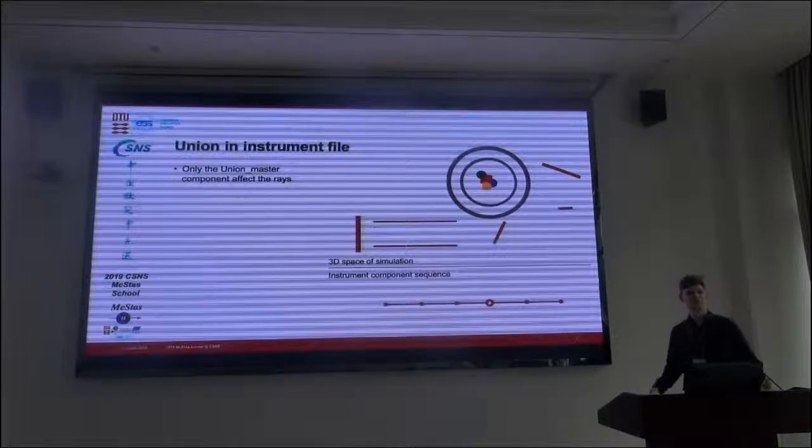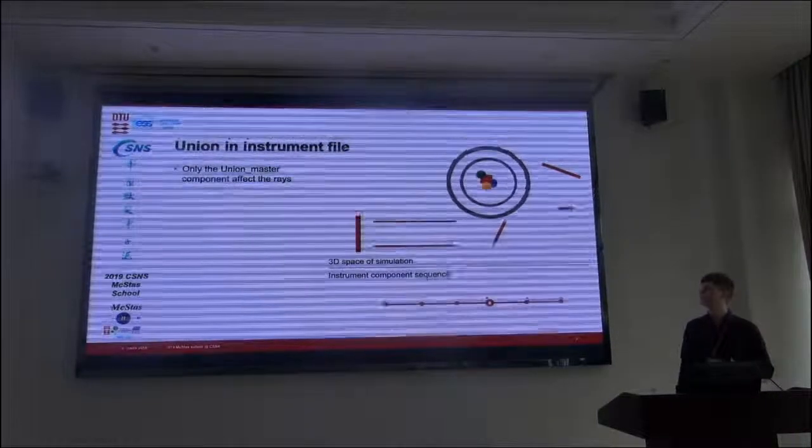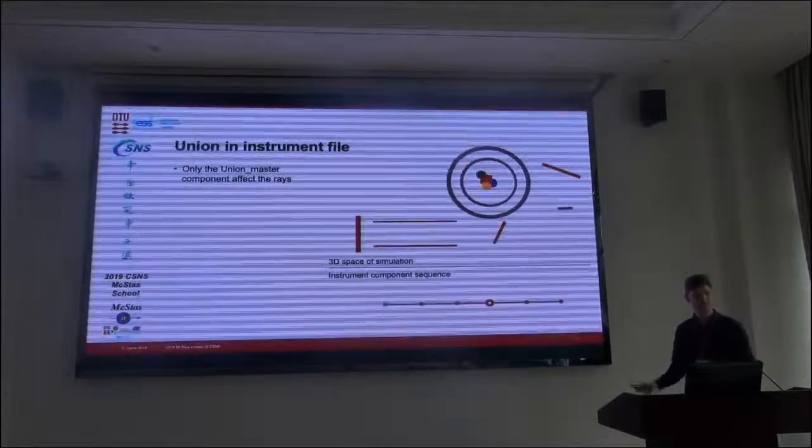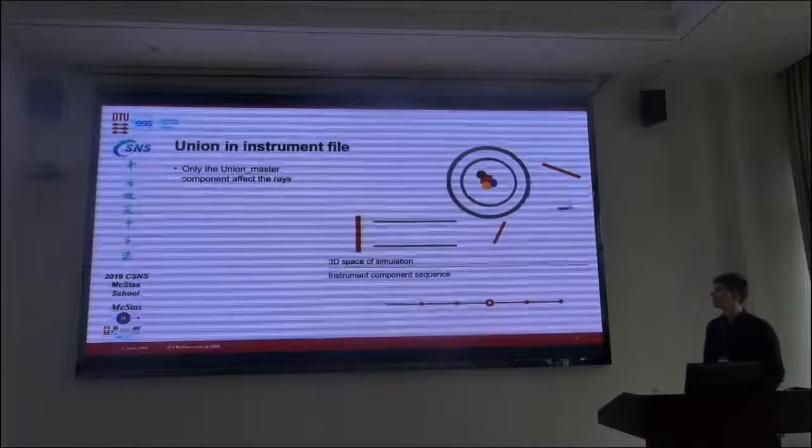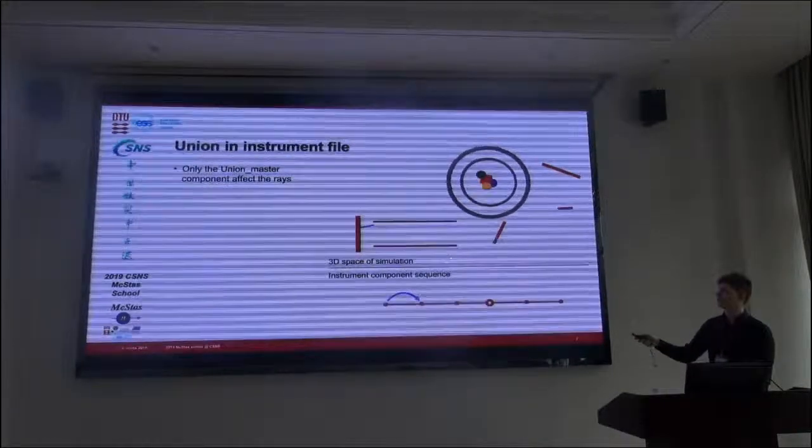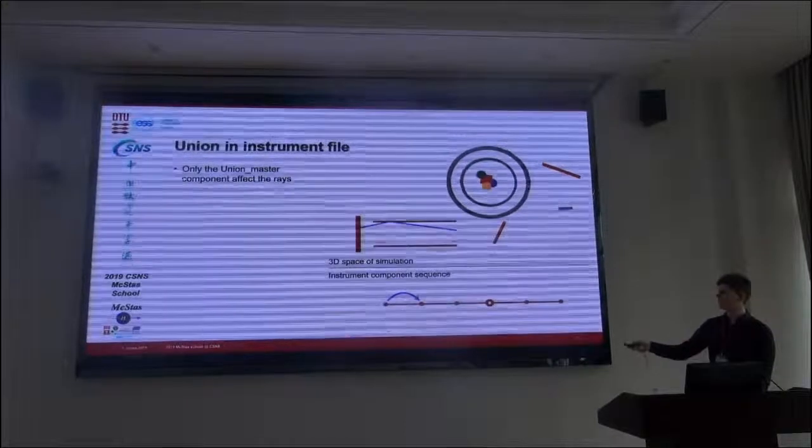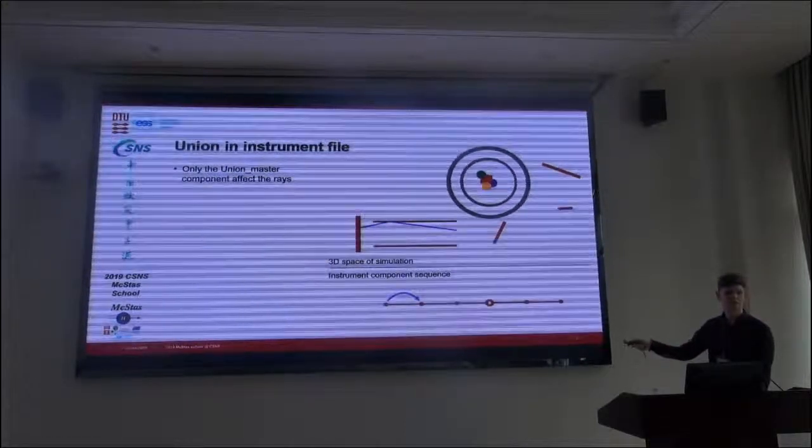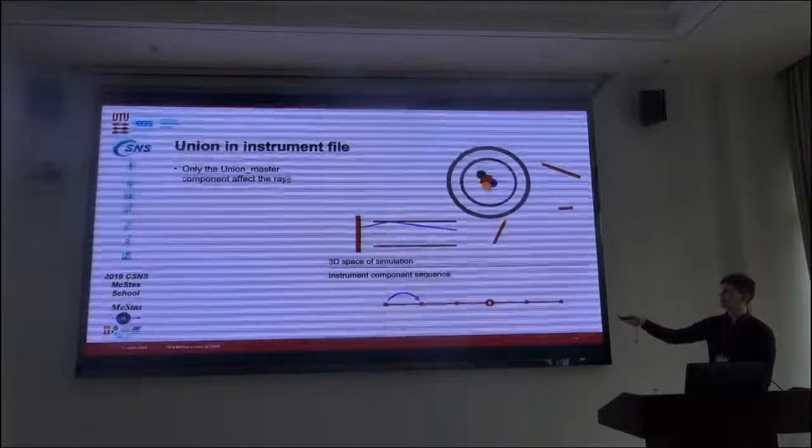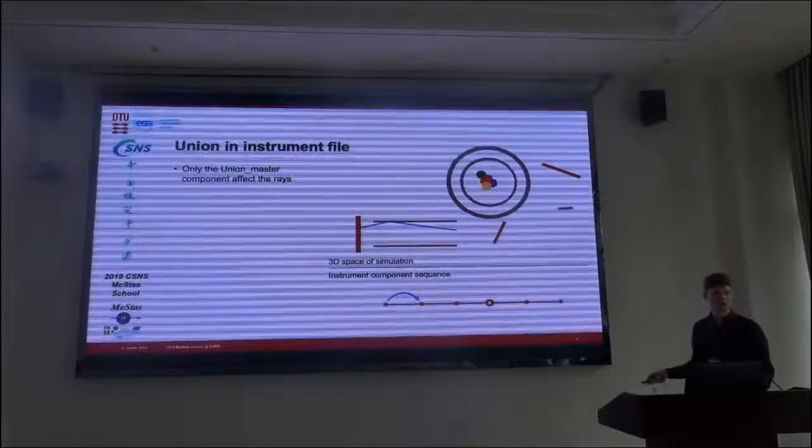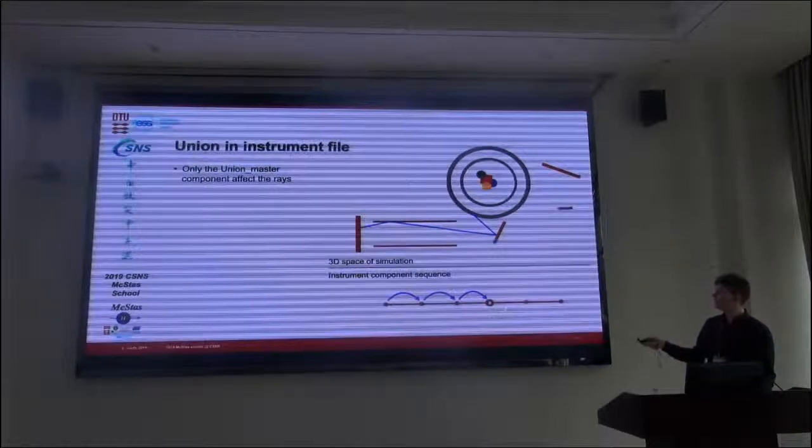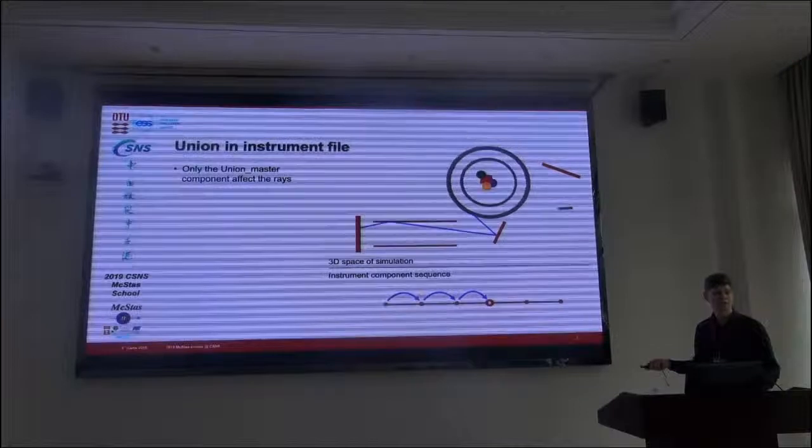We'll continue with a view about what the union components can do if you have a bit more experience with them, and how to use this in your own exercise. So the first thing to consider is what actually happens when you put these union components in a McStas instrument file. Well, as normal, the rays go from the source to the next component. We see the components in your instrument file down here, and then they scatter inside the component internally, and continue. And this is, in principle, also true for the union components.